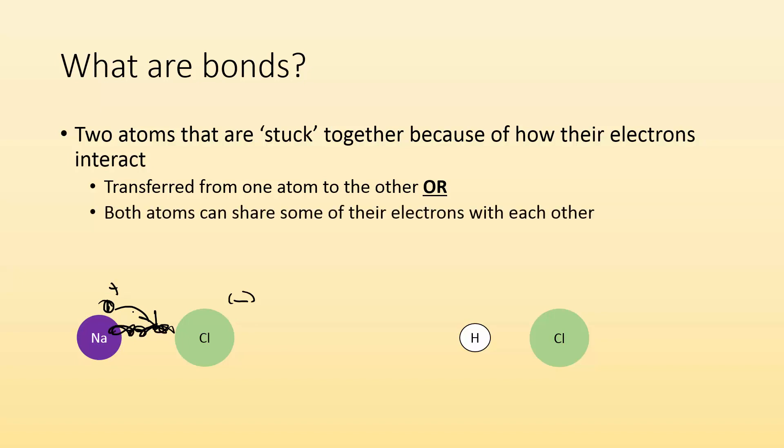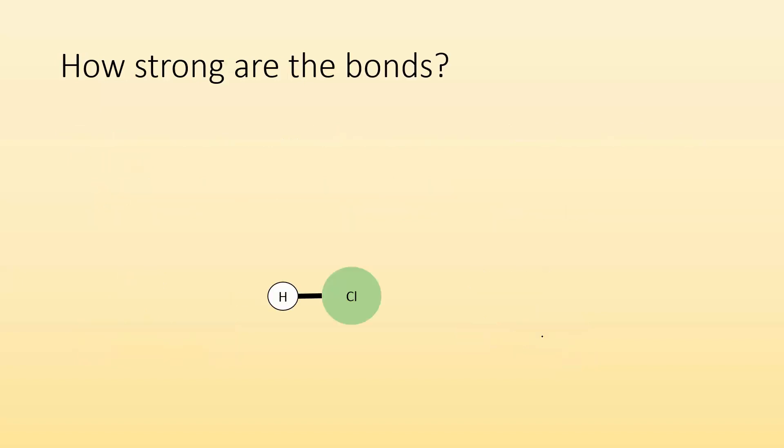Or both atoms can share some of their electrons with each other like an HCl. Well, hydrogen's going to put in one of its electrons, and chlorine puts in one of its electrons, and then we'll share them and we make a bond that way.